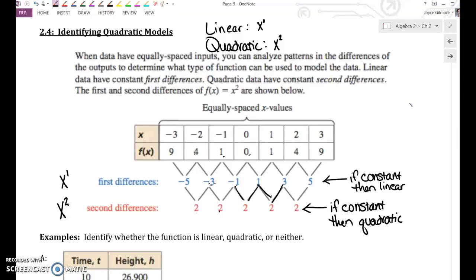So say the first level wasn't the same, the second level wasn't the same, but the third level was the same. What type of function do you think it would be? First level is x to the first, second level is x squared, third level x cubed, x to the third. If the fourth level was the same, it would be x to the fourth, and so on and so on. If it doesn't match that pattern at all, it would be neither. It might be something like an exponential function.